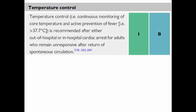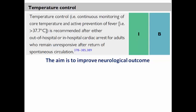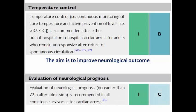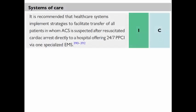Temperature control — meaning continuous monitoring of core temperature to prevent fever above 37.7 degrees Celsius — is recommended after either out-of-hospital or in-hospital cardiac arrest for adults who remain unresponsive after return of spontaneous circulation. This helps improve neurological outcome by preventing post-arrest fever. Evaluation of neurological prognosis is essential after 72 hours and is recommended in all comatose survivors after cardiac arrest to assess neurological recovery and guide decision-making.